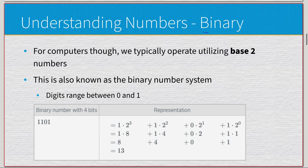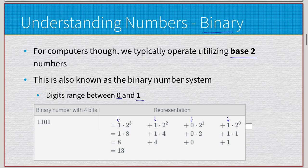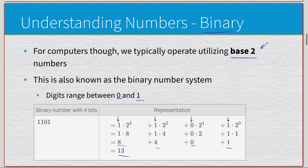Binary, instead of having a range of 0 through 9, has a range of 0 and 1. Looking at 1101, we apply positional notation with base 2: 1 × 2⁰ = 1, 0 × 2¹ = 0, 1 × 2² = 4, 1 × 2³ = 8. So 8 + 4 + 0 + 1 = 13. Binary 1101 equals 13 in decimal. This is one way to do binary-to-decimal conversion.